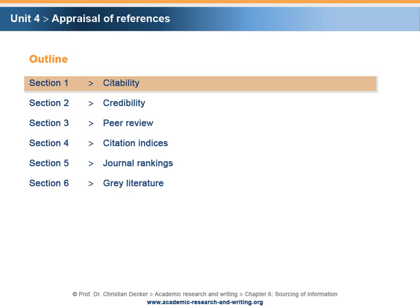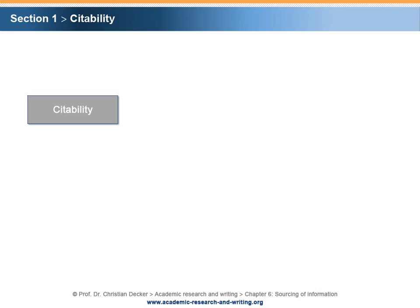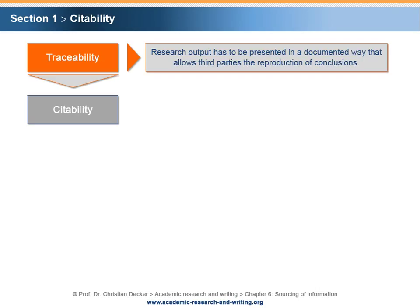Section 1: Citeability. Citeability is a consequence of the academic principle of traceability. The principle of traceability requires that research output is presented in a documented way, allowing for the reproduction of conclusions by third parties.